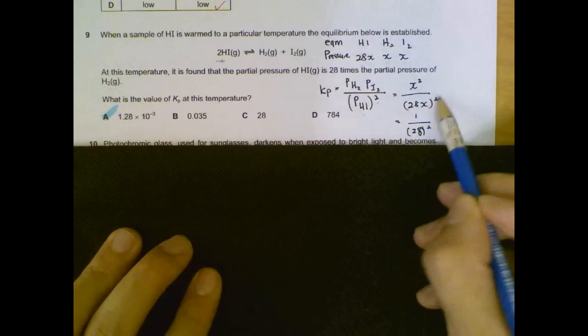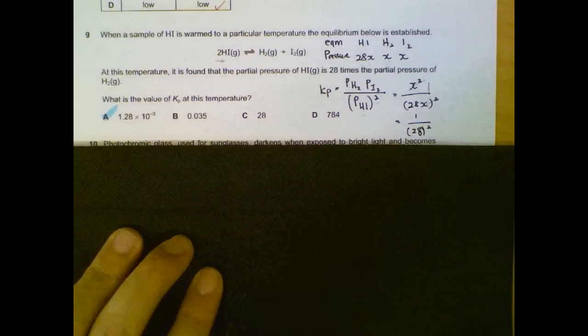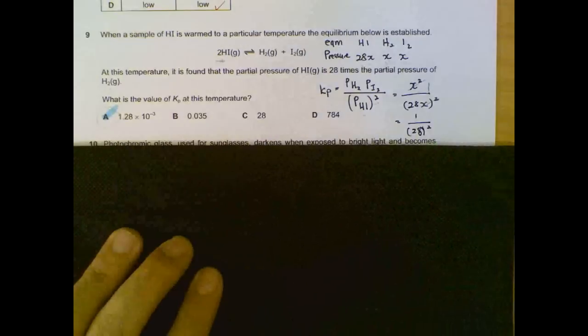So we do not really need to bother what the x is after all. So we have 1 over 28 square. You use your calculator. You can see there is option A.